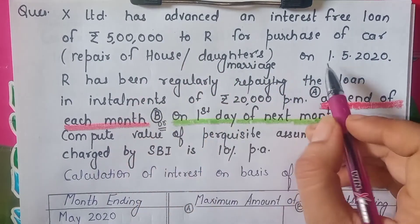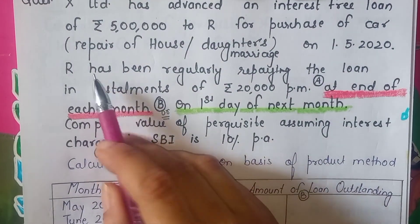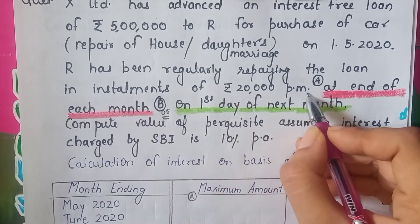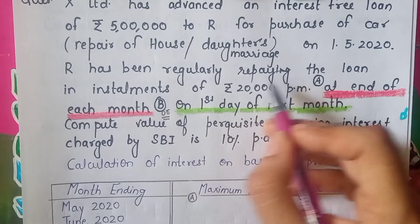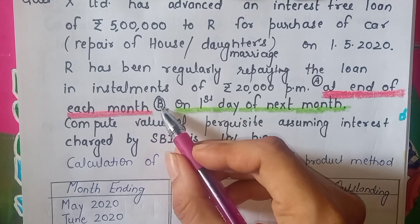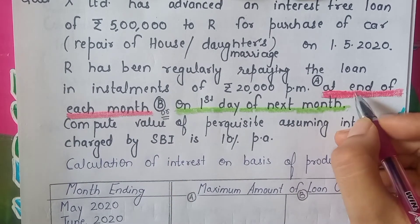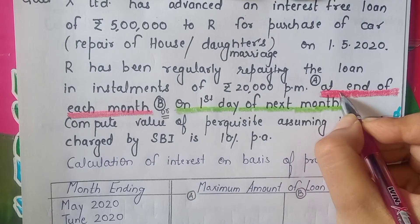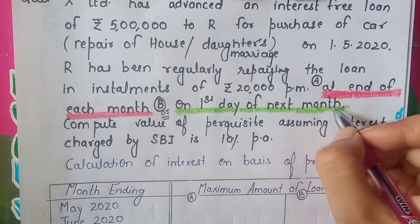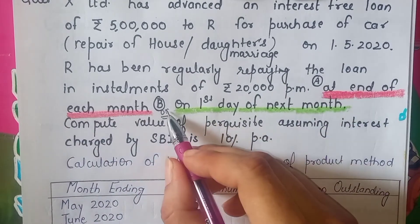A loan of ₹5,00,000 has been given on 1st May 2020. Mr. R has been regularly repaying the loan in installments of ₹20,000 per month. You have two different situations — A and B. In the question the red color underlines situation A and green color underlines situation B.